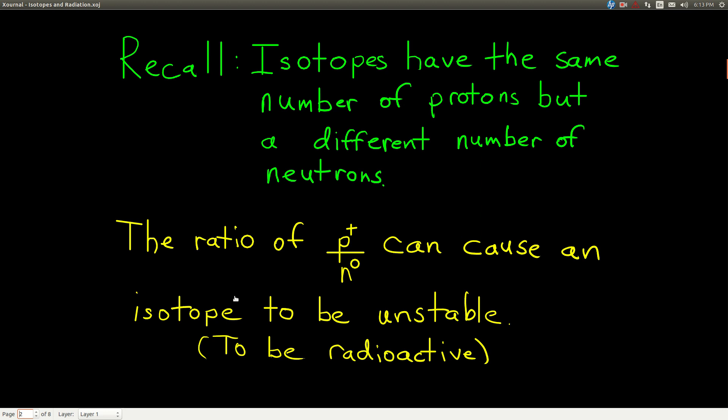And it ends up that the ratio of protons to neutrons can cause the nucleus of some isotopes to be unstable, or in other words, to be radioactive.